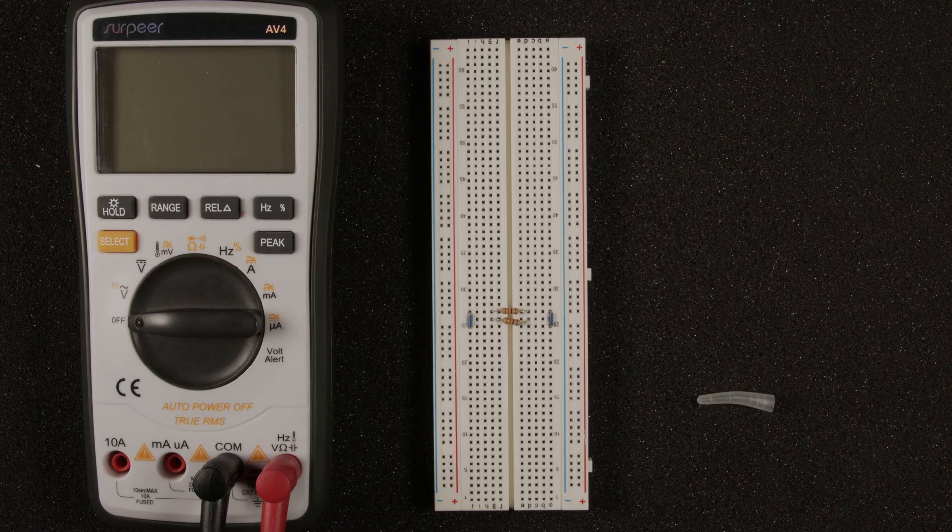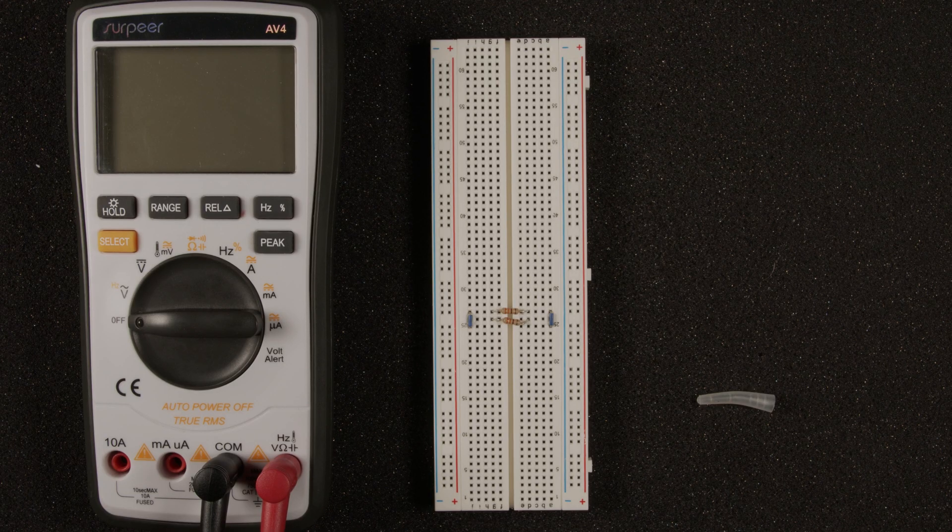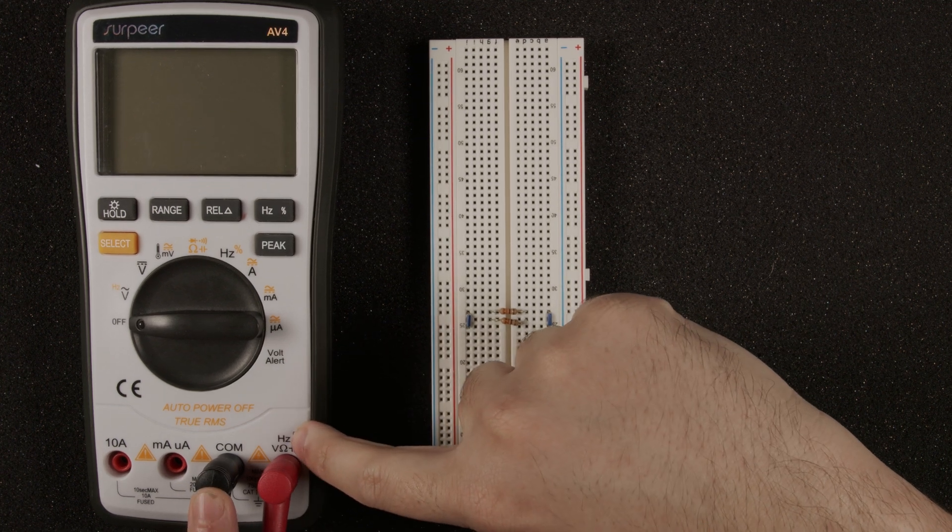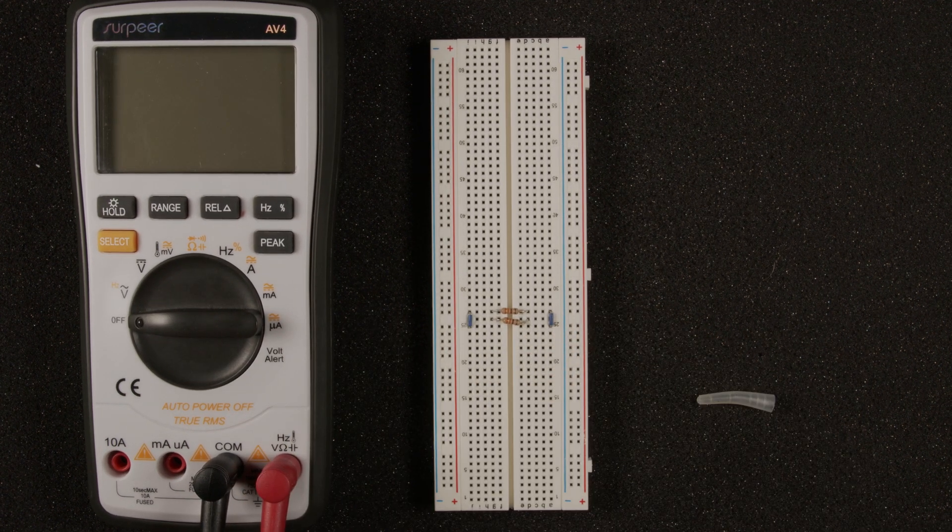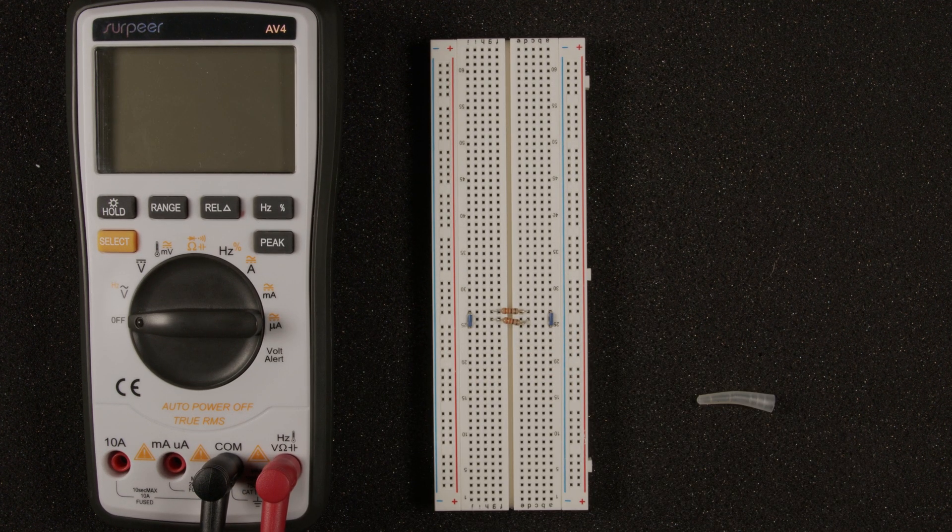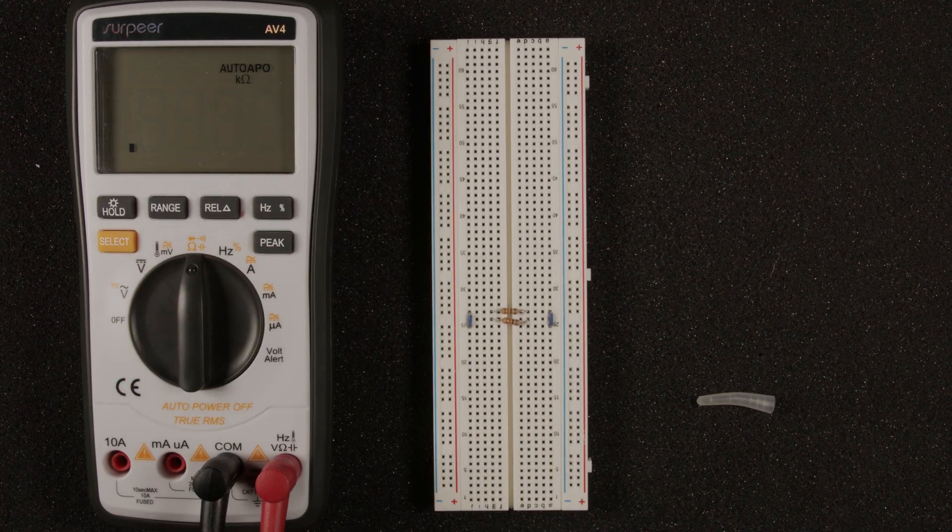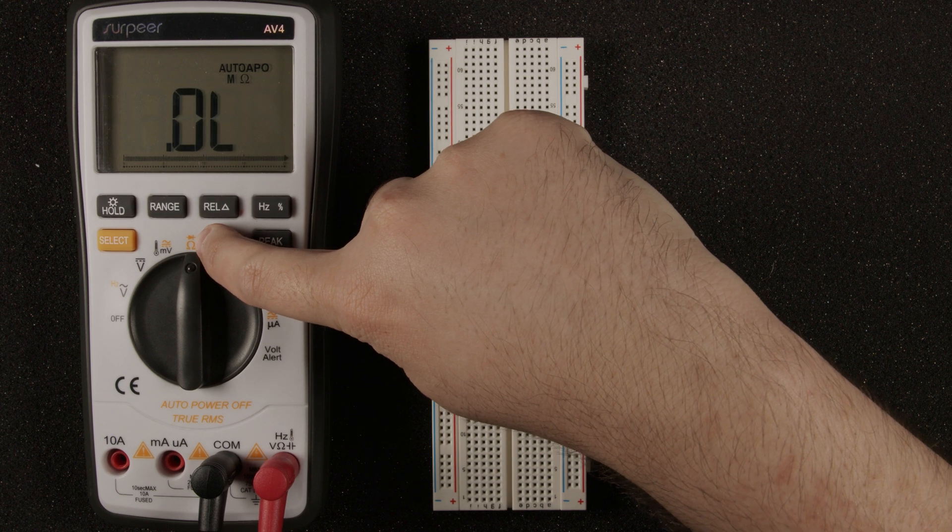Next it's time to learn how to measure resistance. To measure resistance the first thing we need to do is always double check where our probes are plugged in, and since we are plugged in to where it says ohms, we're good to go measuring resistance. Next we need to select ohms on our multimeter, so we're going to turn the dial until we have the ohms selected.